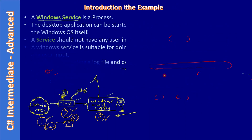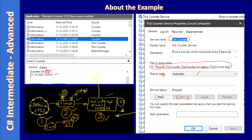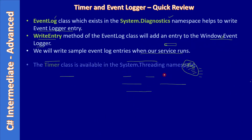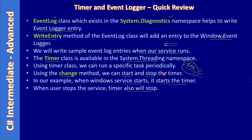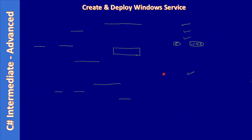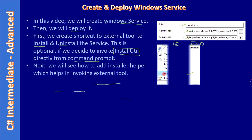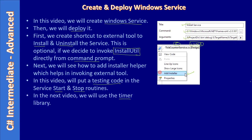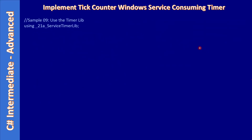First we learned about the Windows service, then we talked about the example, then we reviewed the timer and event logger components. After this we created the timer class library project, then we saw how to deploy the Windows service. In the command-line argument we faced an issue when we used the project directory and dollar target name, so it gave a wrong path and caused some trouble. Then we changed the argument to use a different macro.